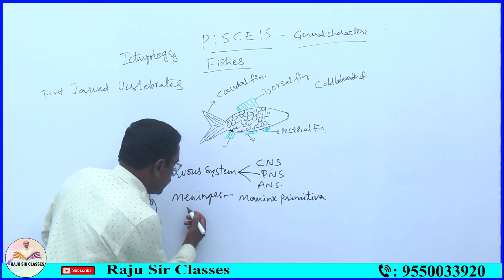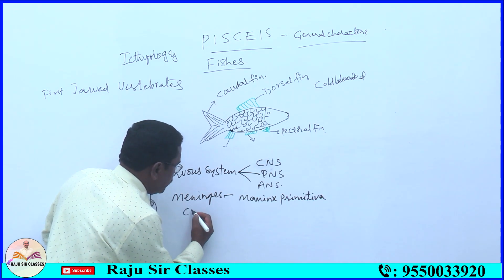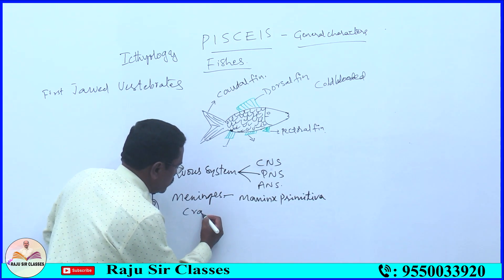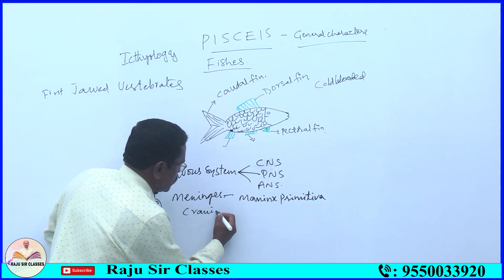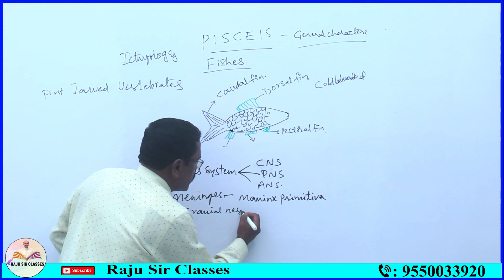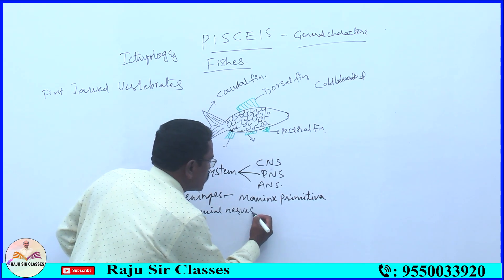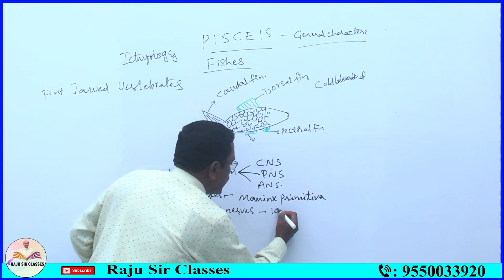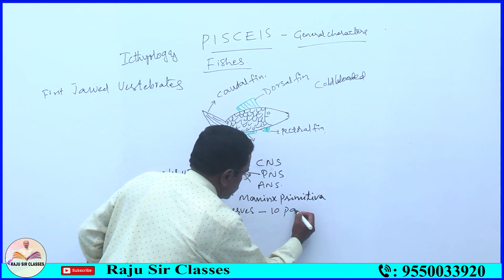Cranial nerves: in fishes, cranial nerves are ten pairs.